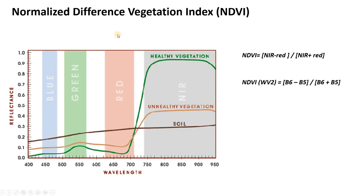The Normalized Difference Vegetation Index exploits the fact that healthy vegetation is very reflective in the near-infrared and very absorptive in the red wavelength. It takes near-infrared minus red divided by near-infrared plus red. With our WorldView-2 sensor, this is B6 minus B5 over B6 plus B5.